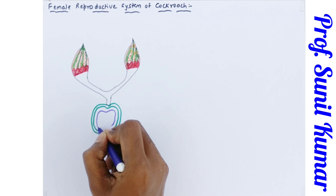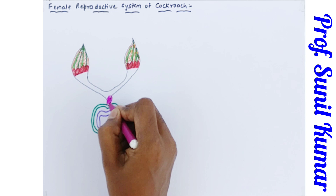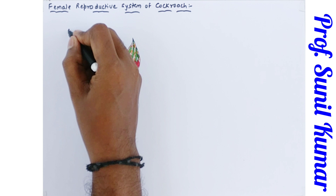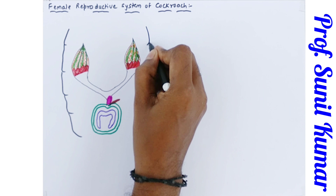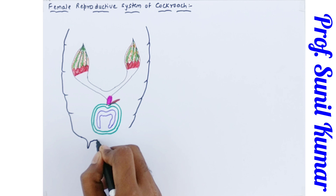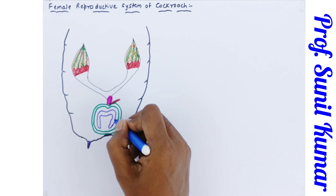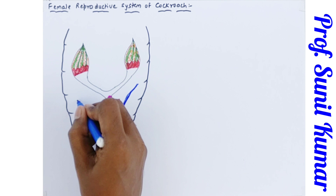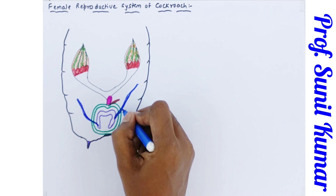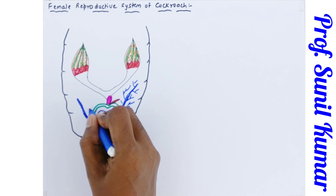The most important part here is the spermatheca. Whatever sperm is given by the male cockroach will be deposited in the spermatheca, where it gets nourished and can be used for fertilization depending on the requirement of the female cockroach. The small opening is the gonapophysis. In female cockroach, there is only one gland — the collateral gland — which plays a very important role in the development of the egg.